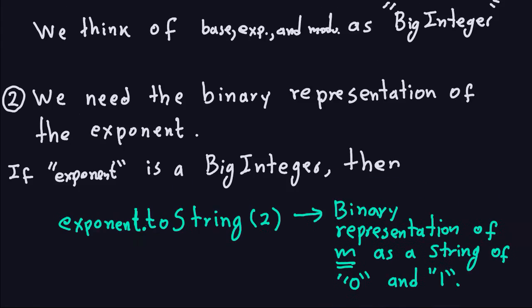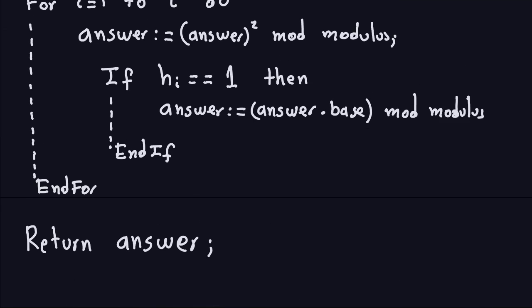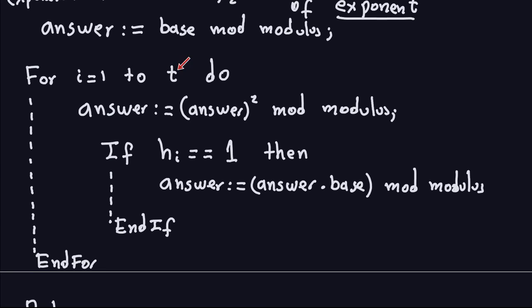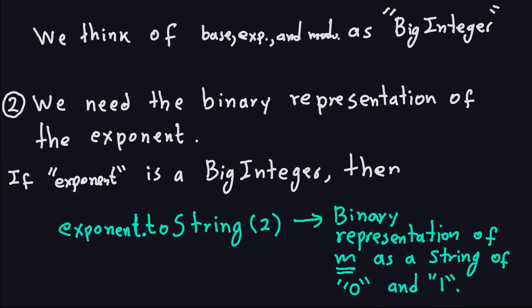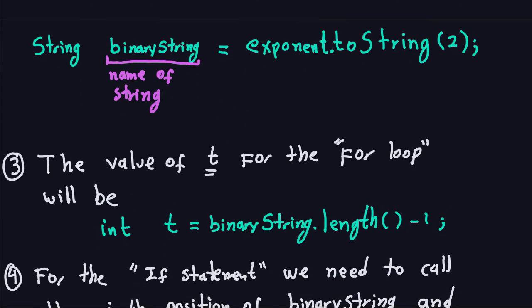For the for loop, t corresponds to the binary representation of the exponent. Note that t is not the length of the binary sequence, because indexing starts at zero — so the length is actually t plus 1. t is the length of the binary representation minus 1. To get t in code, you take binaryString.length() minus 1. t will be a regular integer — you don't need a bigger number type for that.